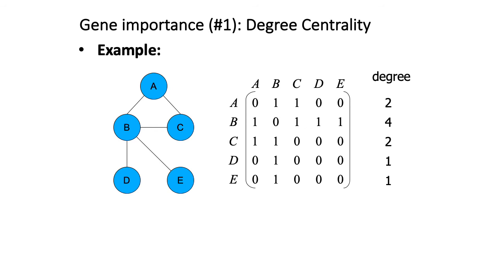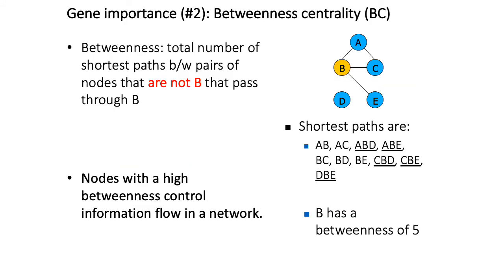Degree centrality simply asks: for every node, how many other nodes is it connected to? There are two ways to calculate it. You can look at the graph and count how many other nodes each node connects to, or you can use the adjacency matrix. An adjacency matrix has rows and columns referring to different nodes, where a zero means no edge between a pair and a one means there is an edge. You calculate degree by summing the ones across each row.